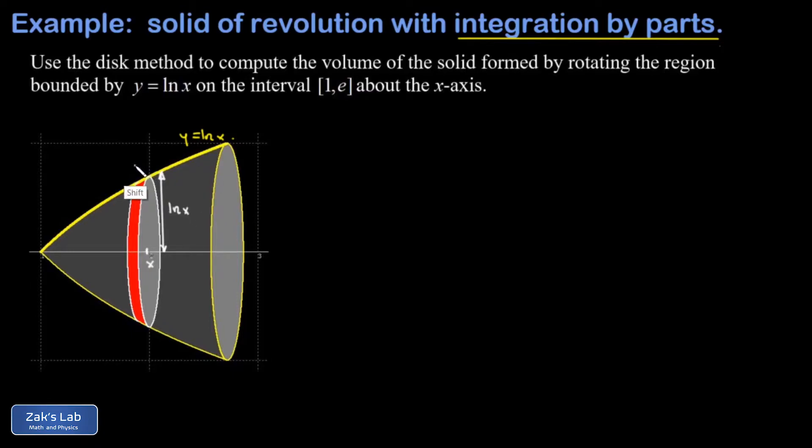And then the thickness is dx. So we find our incremental volume, I'm going to call that dv. That's pi times radius squared, so pi times the natural log function squared. That gives me the area of the circle, and then multiplied by the thickness dx.